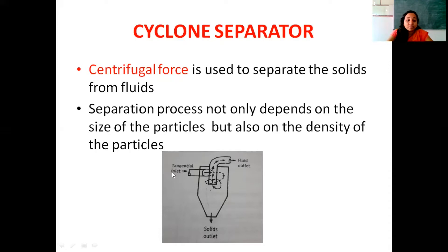The solid suspended air stream is introduced through this tangential inlet into the cyclone separator. Short circuiting of air directly from the tangential inlet into the fluid outlet is prevented by this arrangement — that is why the fluid outlet is protruded into the cyclone separator.